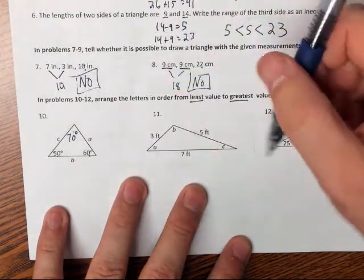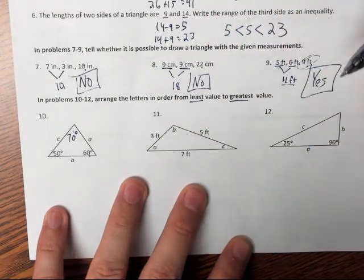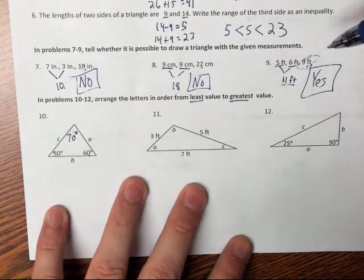Now, remember that in a triangle, the smallest side is across from the smallest angle, and the largest side is across from the largest angle.